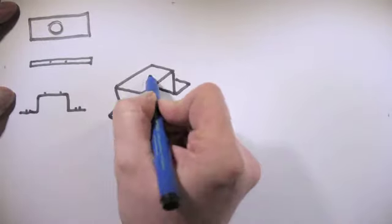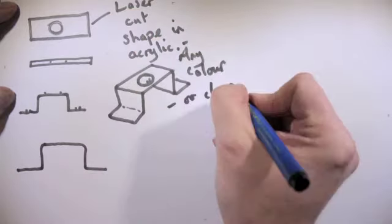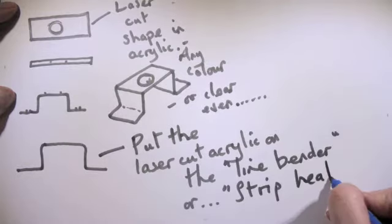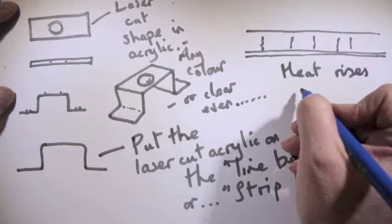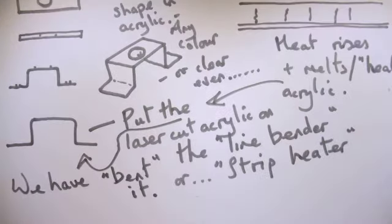Okay, here's how you make a basic lamp structure. A basic lamp structure with a piece of acrylic cut on the laser cutter in any color, clear even if you want. Laser cut acrylic, you can line bend it on the strip heater. The heat rises, it melts it, so you can shape it and cut it.